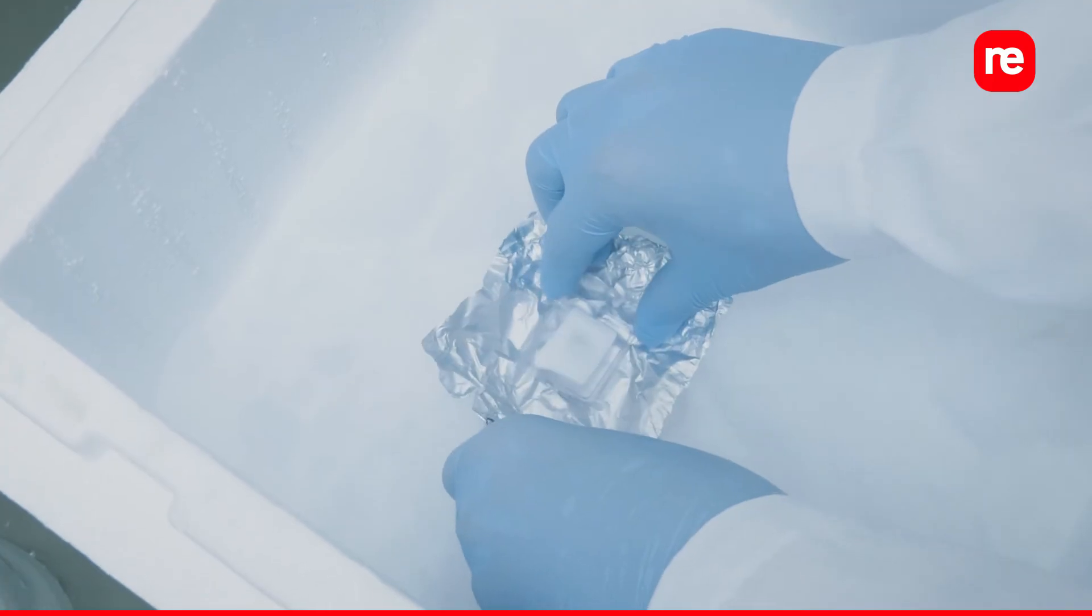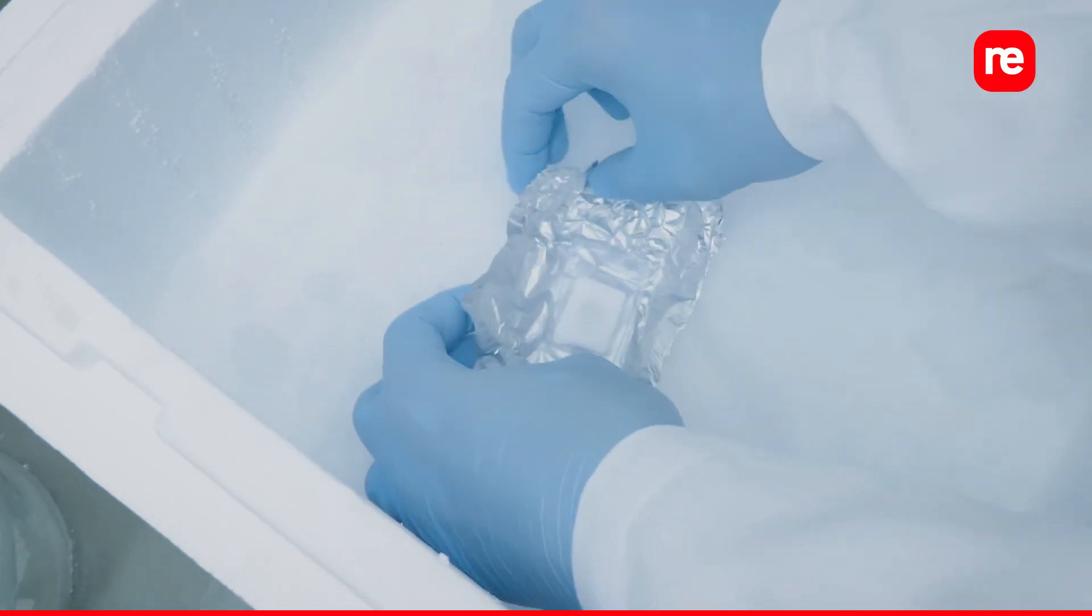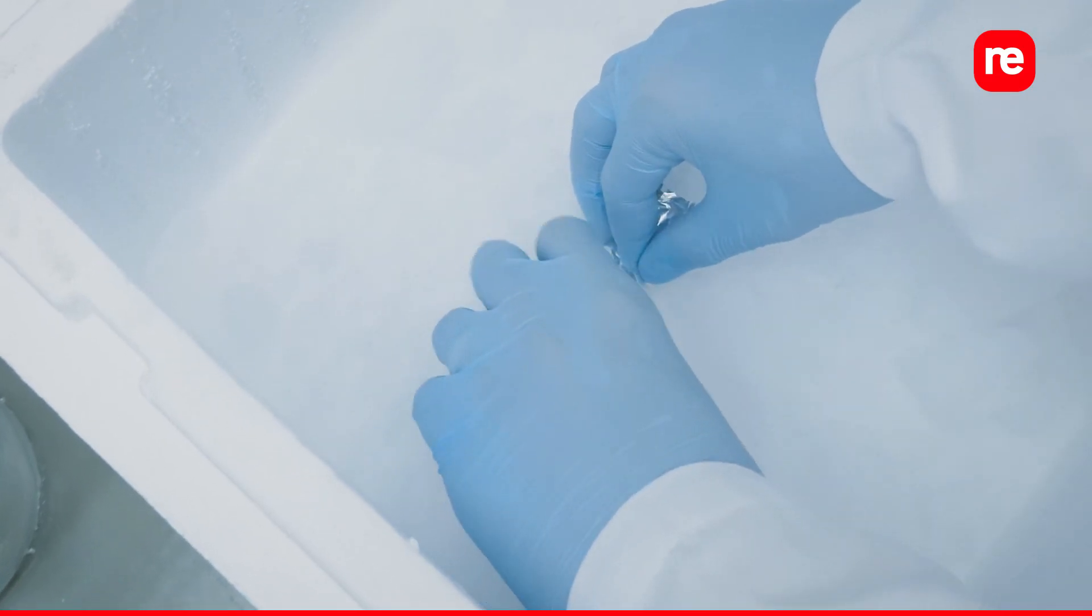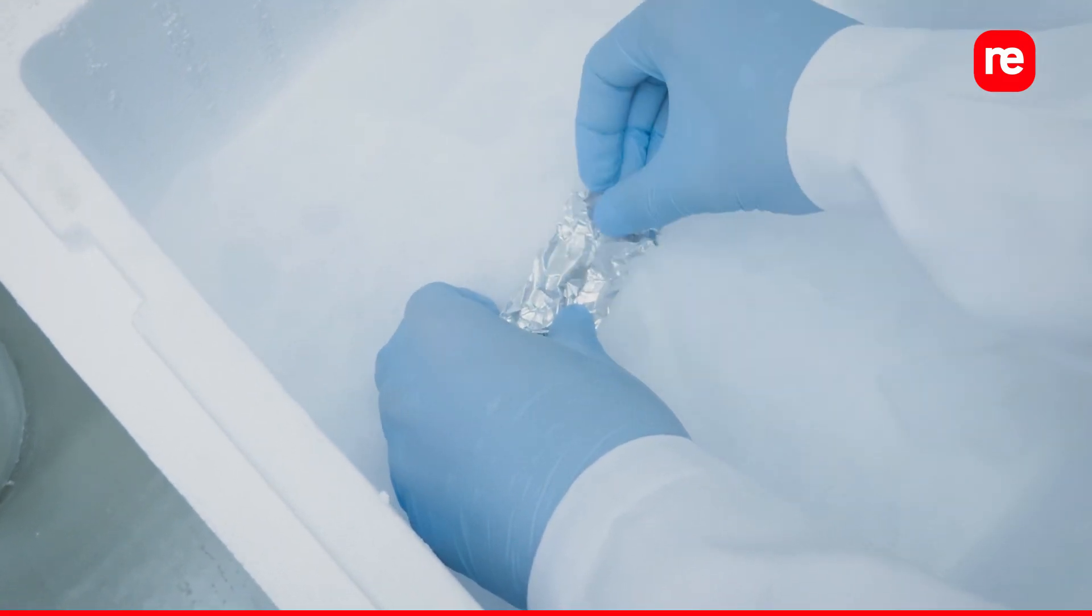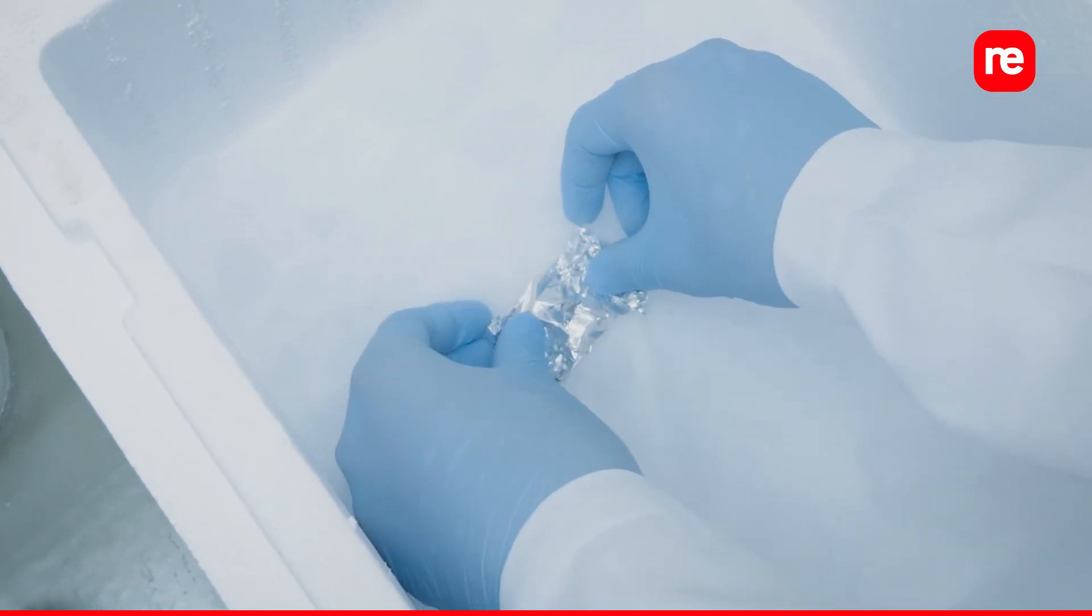Retrieve the cryomold and completely wrap it in a pre-cooled and labeled piece of aluminum foil. Store at minus 80 degrees Celsius until section.